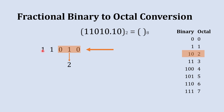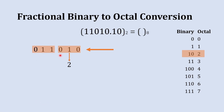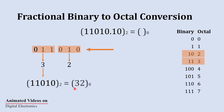Next we have only two digits remaining, so we are going to add one zero on the left-hand side so that it will not impact the value of this number. The three digits are now 0 1 1. The octal equivalent to 0 1 1 is 3, so we write 3 below it. The octal equivalent to this whole binary number part is 3 2.